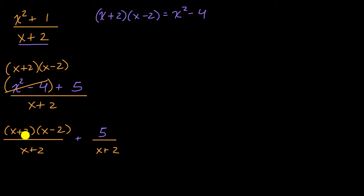And now as long as x does not equal negative two, then we could divide the numerator and the denominator by x plus two, and then we would be left with x minus two plus five over x plus two, and I'll put that little constraint if I want to say that this expression is the same as that first expression, for x not equaling negative two.